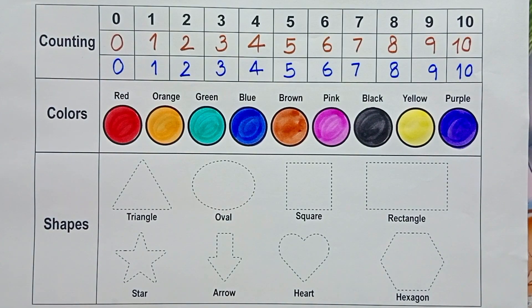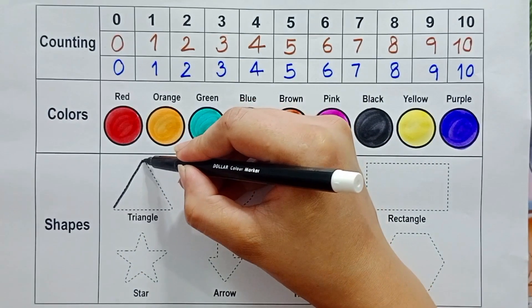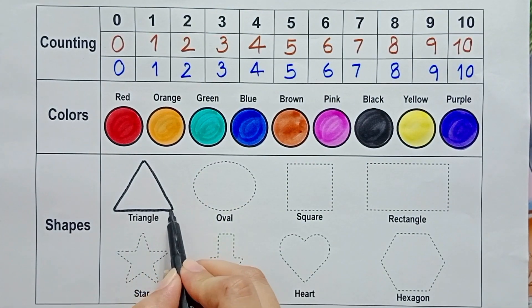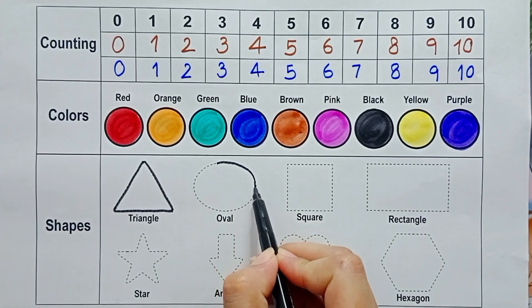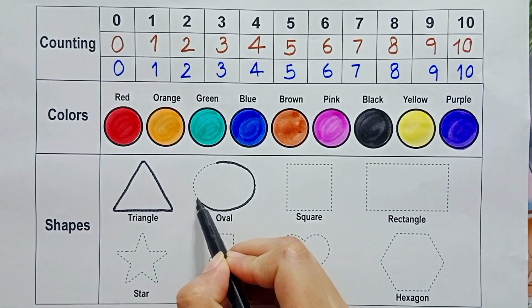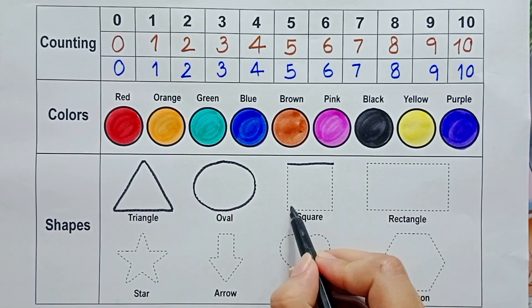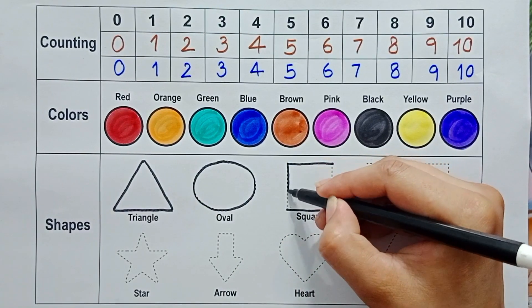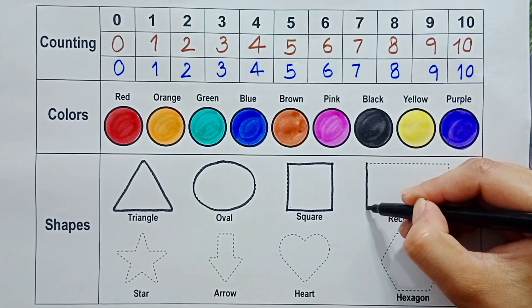Let's draw shapes. Triangle. Oval. Square. Rectangle.